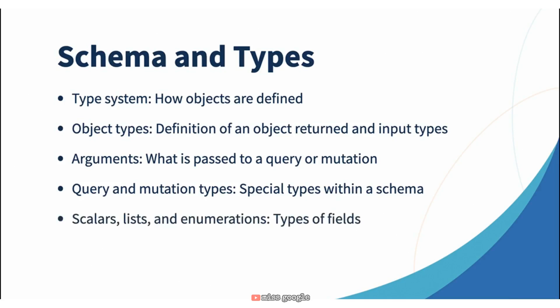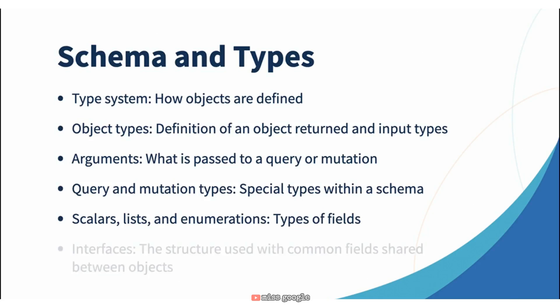Fields can contain scalars, lists (including lists of types), and enumerations which are defined within the type system. Scalars have a default value that every implementation must maintain, but with GraphQL Java we get extra scalars that don't exist in the standard GraphQL spec — we'll talk about those as we do our implementations. And like most languages, there's the concept of interfaces. If you have two objects that share a set of core fields, you can specify an interface and implement that in both objects, which allows you to reduce the complexity of your schema by building in reuse where possible.